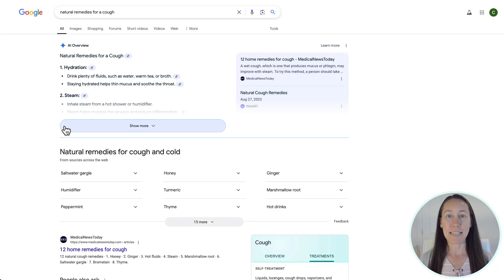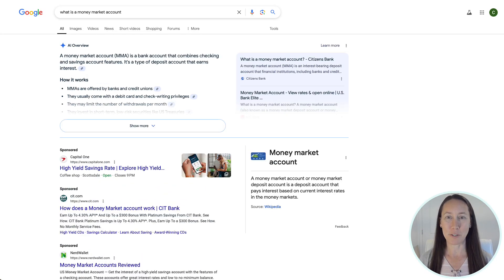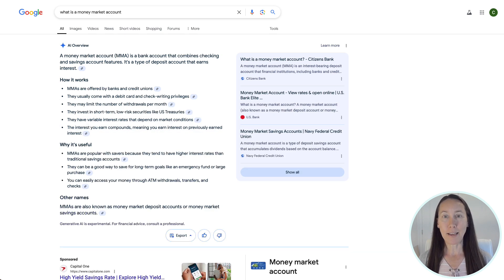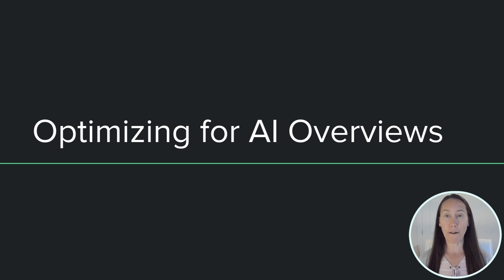I'm sure by now you have been seeing all of the AI overviews popping up at the top of Google search results. What I found really interesting was that last week I was doing a competitive analysis for a client and I actually found that the top competitor was gaining traffic from just being ranked in the AI overviews.